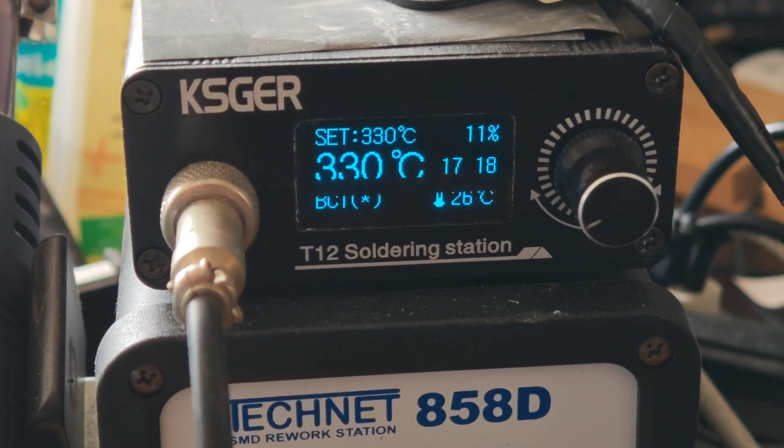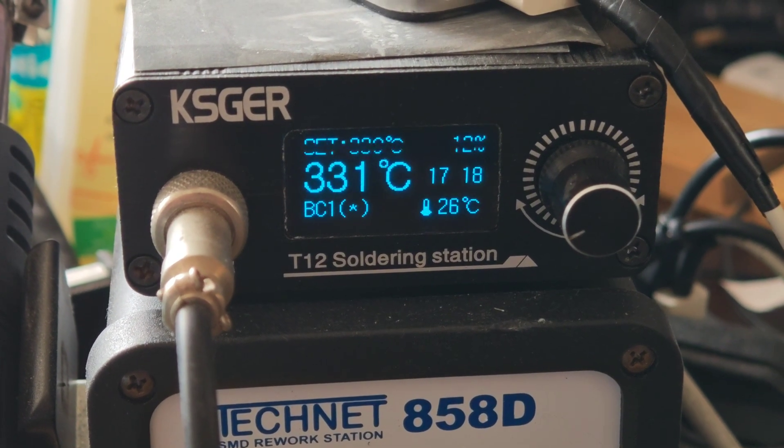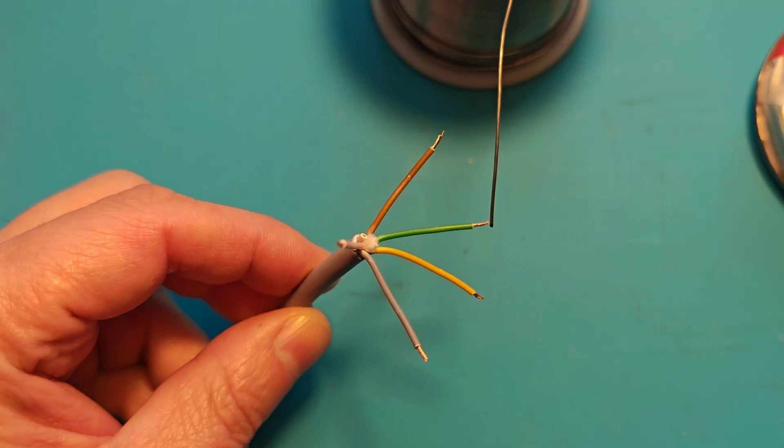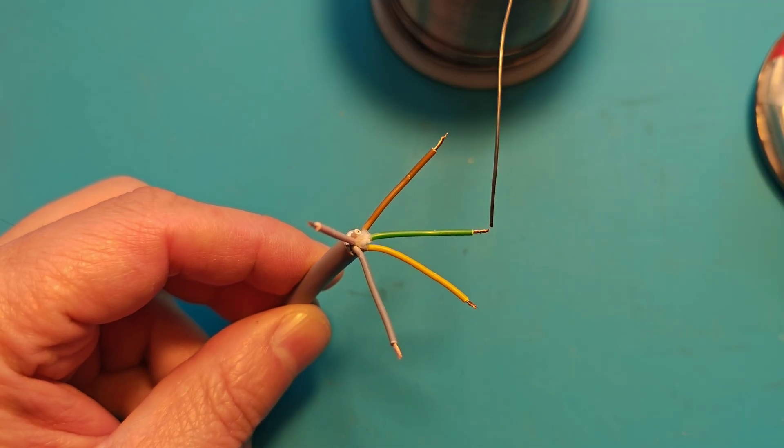I have the soldering station set to 330 degrees Celsius. Here you can see a few copper wires ready for soldering.